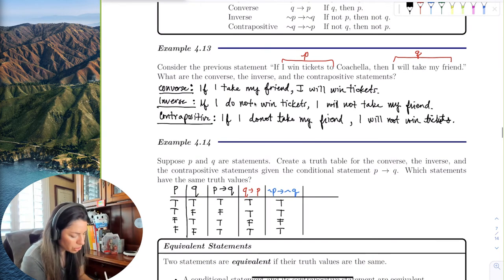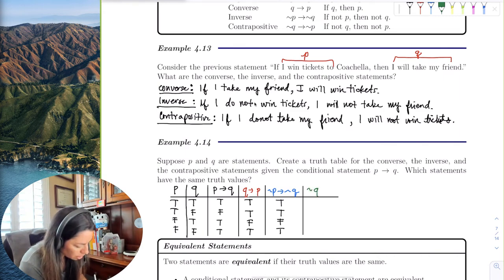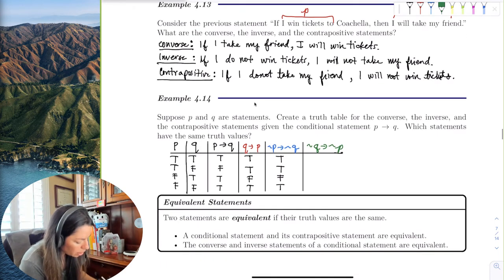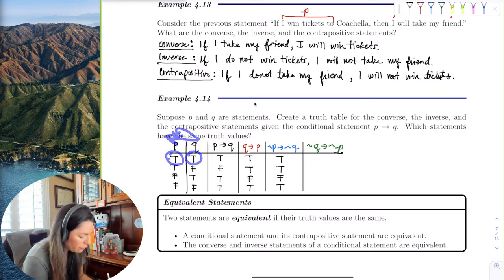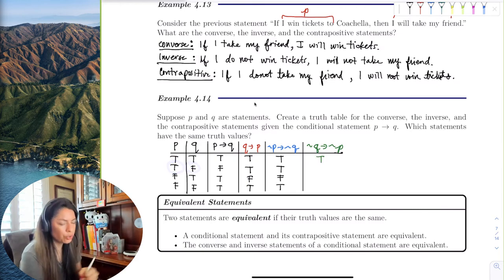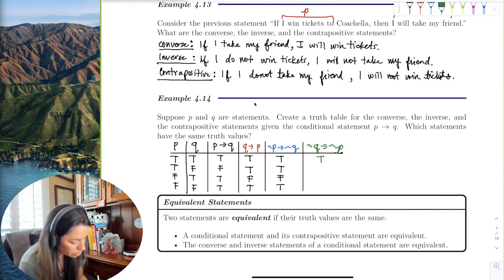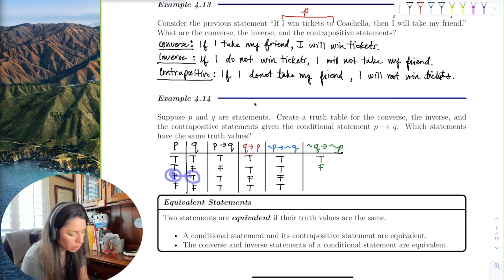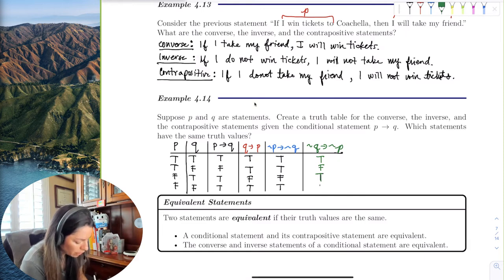The last one is the contrapositive, 'if not Q then not P.' Now we go the other way and look at Q's column reversed. False→false is true; false→true means true→false, which is the only false; true→false means false→true, which is true; false→false means true→true, which is true. So the contrapositive column is: true, false, true, true. The only false is in the second row.